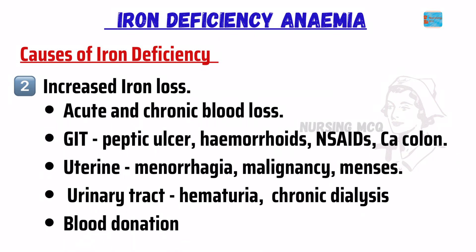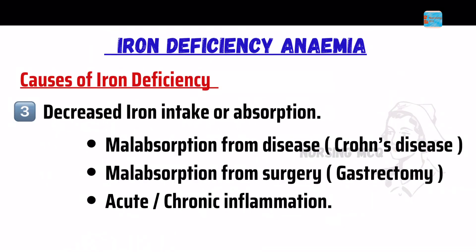Sources of iron loss include peptic ulcer, hemorrhoids, NSAIDs, colon cancer, menorrhagia, malignancy, menses, hematuria, chronic dialysis, and blood donation. The third cause of iron deficiency is decreased iron intake or absorption, including malabsorption from disease or surgery, and acute or chronic inflammation.